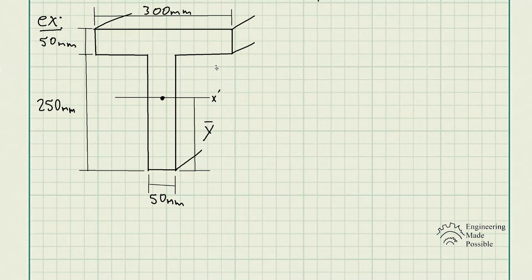Here we have the T-beam with its appropriate dimensions of 300 millimeters, 50, 250, and 50. When it comes to solving for the area moment of inertia, we always need to find its centroid first, because we always solve for the moment of inertia about the centroid of a cross-sectional area.